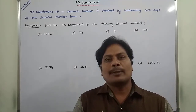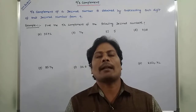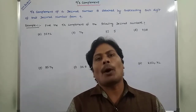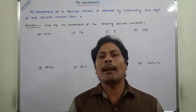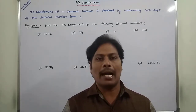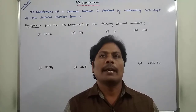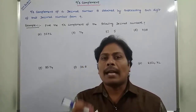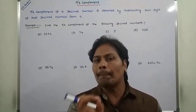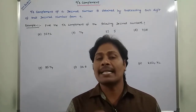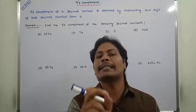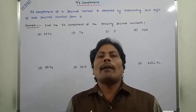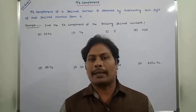Hi friends, today I am giving a lecture on 9's Complement. 9's Complement is one type of complement used in digital logic design, switching theory and logic design. How to find out the 9's complement of a given number? The 9's complement of a given decimal number can be obtained by subtracting each digit in that decimal number from 9. That is called the 9's complement of the given number.